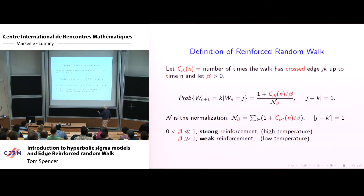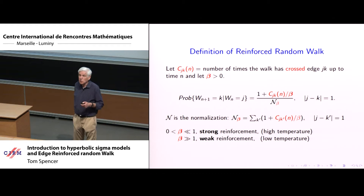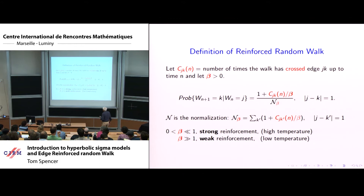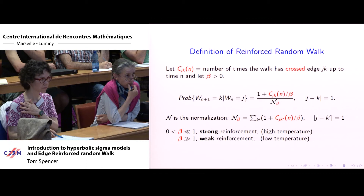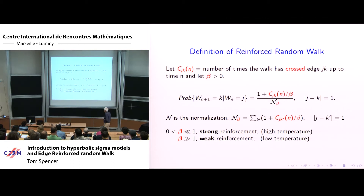So beta large means the reinforcement is less important — this is low temperature in statistical mechanics terms, or weak reinforcement. Beta small means the reinforcement is more important — this is high temperature, or strong reinforcement. In statistical mechanics, high temperature is usually much easier to understand than low temperature. Weak reinforcement turns out to be a kind of perturbation of ordinary random walk, but it's a non-trivial perturbation. So this will be the more challenging case to understand.